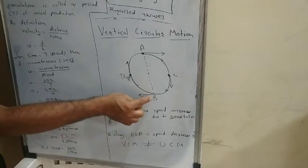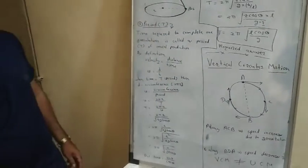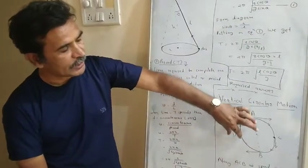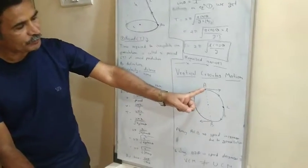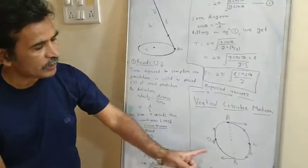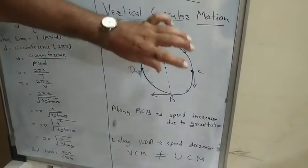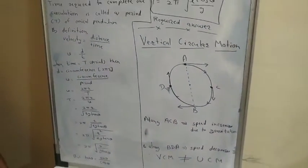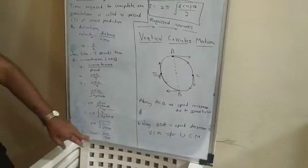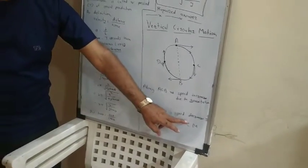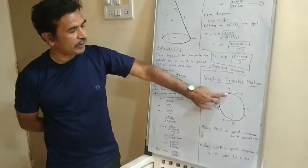When the body moves from B to D and D to A (upward direction), because of gravitational force, the speed decreases. So at every point of this circle, velocity changes — velocity increases from A to B and decreases from B to A. Therefore, vertical circular motion is not uniform circular motion; velocity does not remain constant.